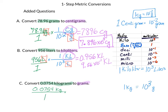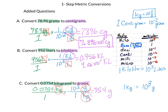We'll write our second fraction next to it. We see kilograms on the top to start with, which means we'll have kilograms on the bottom and grams on top. The 1 stays with the kilo, and the 10 to the third exponent goes with the grams. The kilogram units cancel out, leaving us with our answer in grams. On your calculator: 0.0754 divided by 1, times 10 to the third, divided by 1. That gives us 75.4 grams. In correct scientific notation, that's 7.54 times 10 to the first grams.